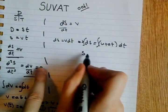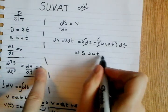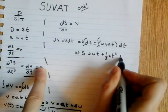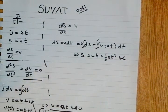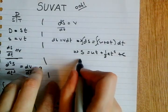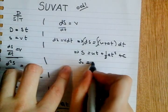So, S, this goes to S, is equal to UT plus, add one to the power divided by the new power, AT² over 2 plus C, our constant of integration. Now displacement in this case also depends on time. So, the initial condition, the initial displacement is going to equal zero.